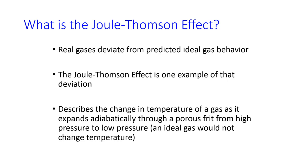The Joule-Thompson effect is an example of deviation from ideal gas behavior, and it describes the changing temperature of a gas during an adiabatic expansion from high pressure to low pressure. An ideal gas would not change temperature over this process, but real gases do.